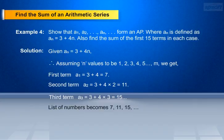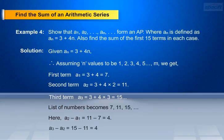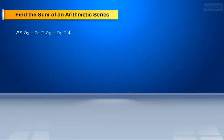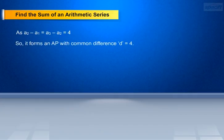The list of numbers becomes 7, 11, 15, and so on. Here a2 minus a1 equals 11 minus 7 equals 4, and a3 minus a2 equals 15 minus 11 equals 4. Since a2 minus a1 equals a3 minus a2 equals 4, the above list of numbers forms an AP with common difference d equals 4.